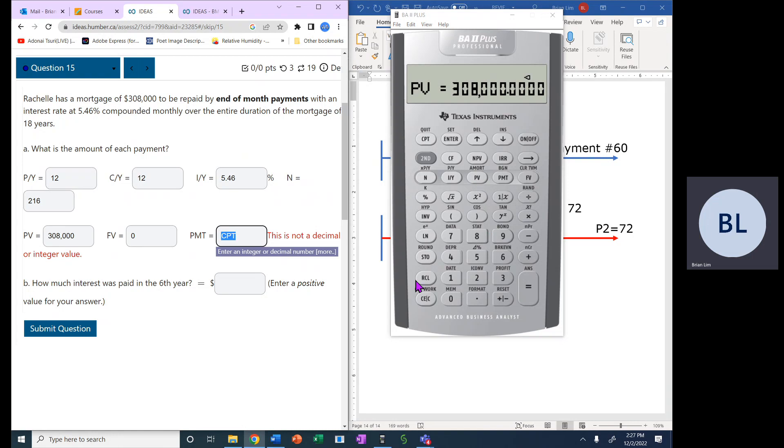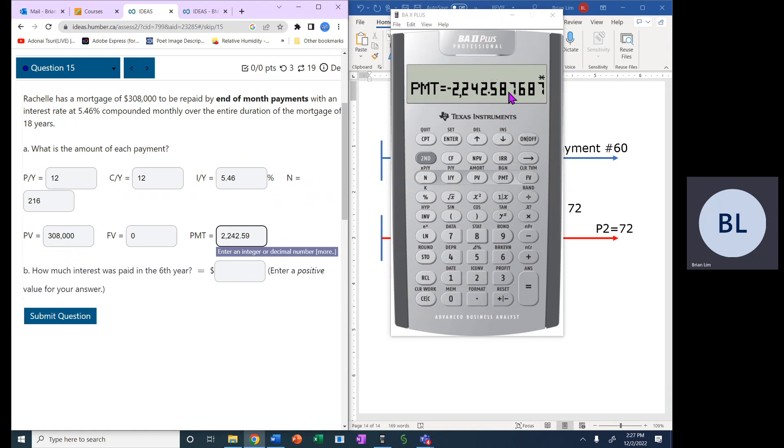The payment is what we like to compute. The future value is 0, so there we are, and we compute the payment. The payment is $2,242.59, if you round to two decimal places.